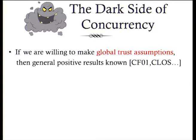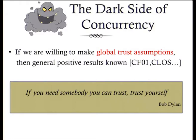If we are willing to make some global trust assumptions — for example, trusting a party to issue an honestly chosen common reference string — then we can actually get general positive results, and there is a long line of work dealing with this. However, a driving goal in cryptography is to eliminate the need of trusting other parties. Therefore, ideally, we would like to design protocols in the plain model without trusting other parties.